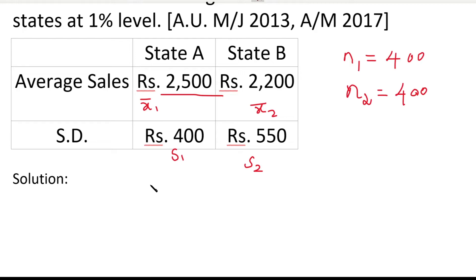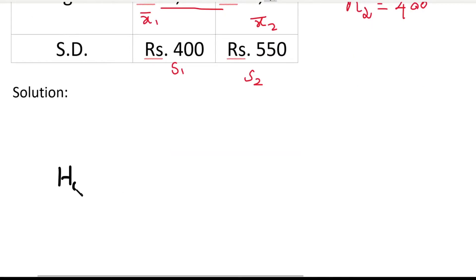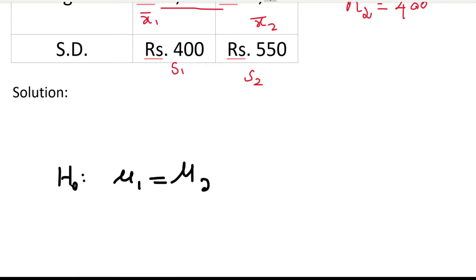Next, let's set up H0 and H1. H0 is the null hypothesis, which means there is no significant difference between the two population means. So we write H0: mu1 = mu2, meaning the two population means are equal.